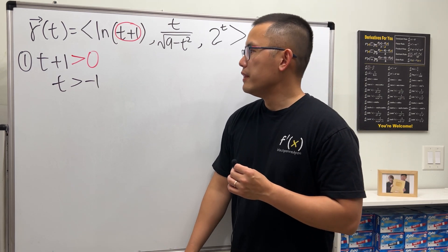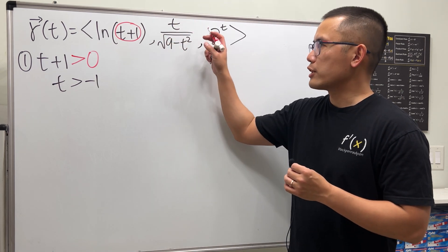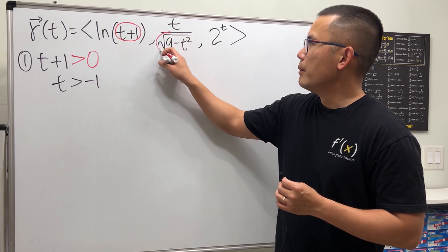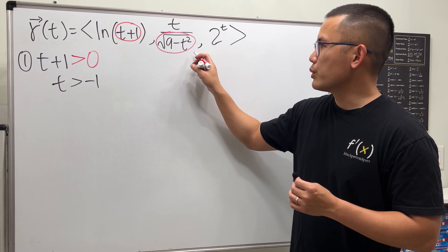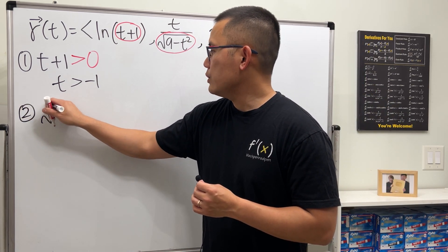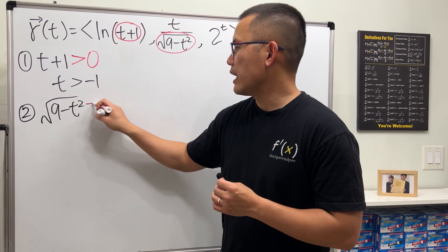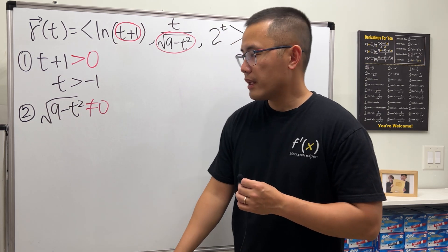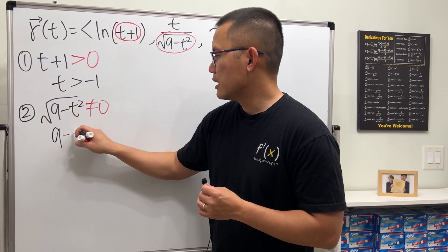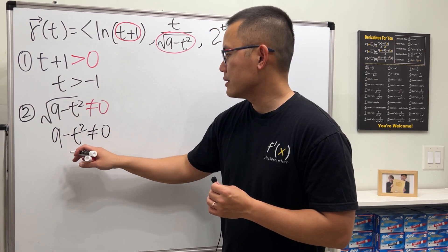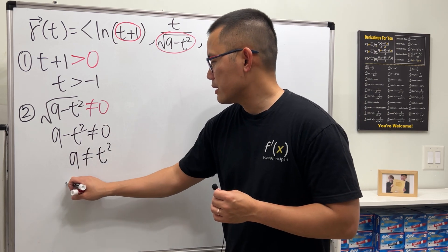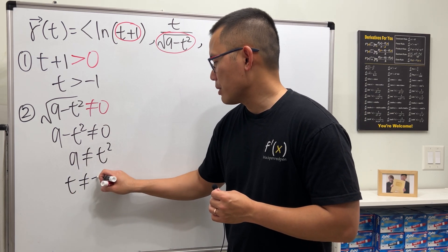Next, we see that we have a fraction, which means we have two different things to work out. First, make sure the bottom is not equal to zero — that's condition number two. The square root of nine minus t squared cannot equal zero. Square both sides and work it out: t cannot be plus or minus three.